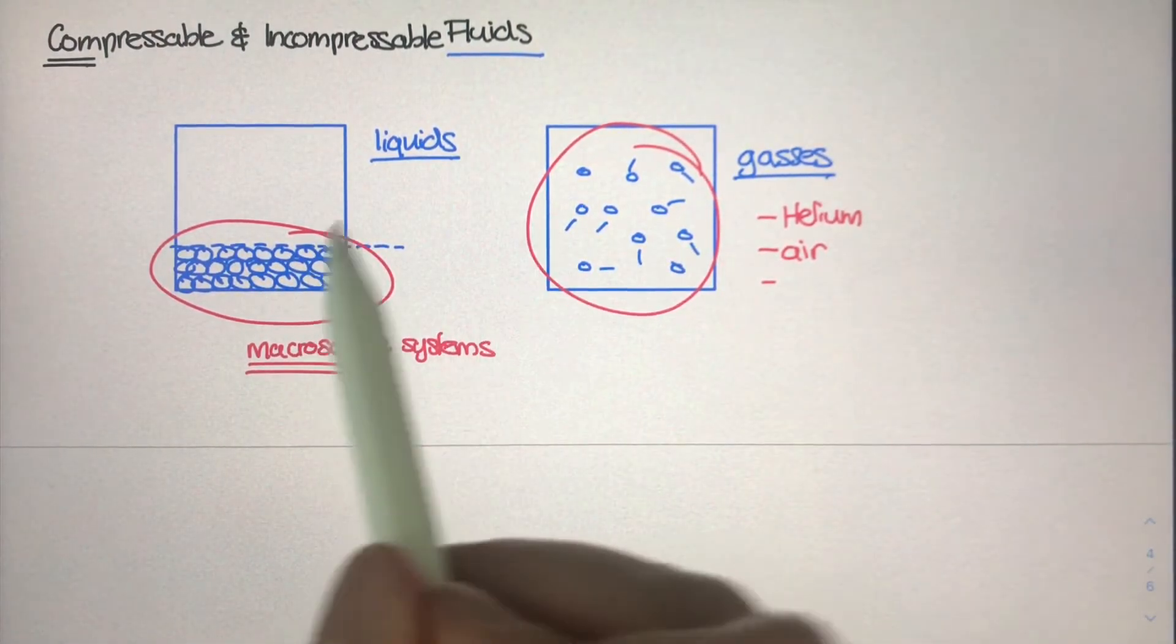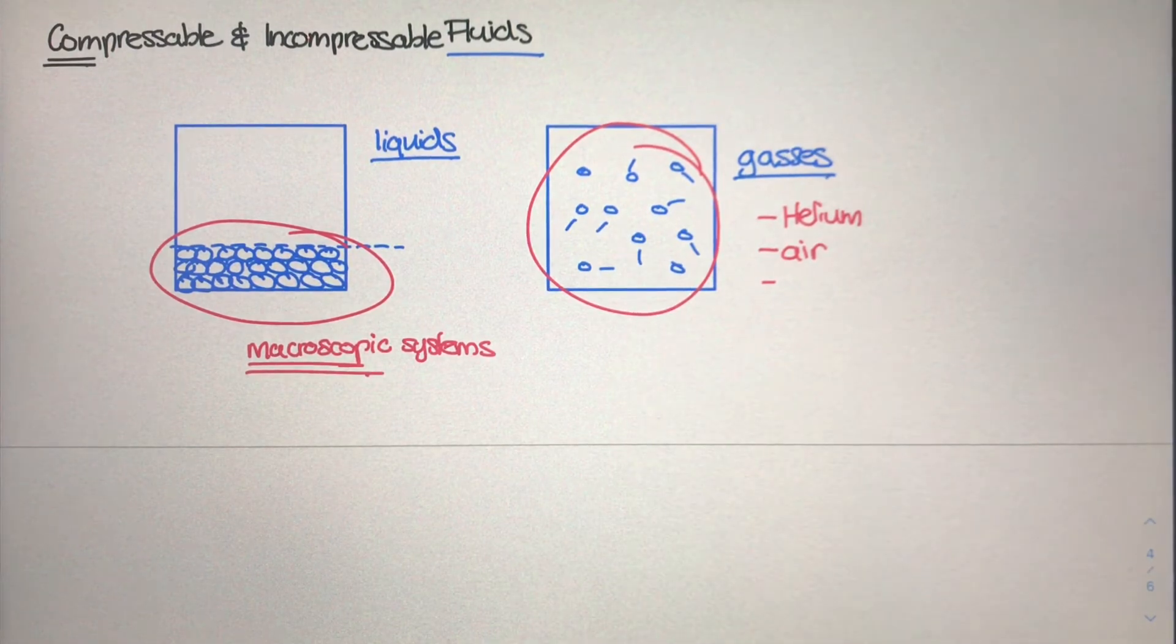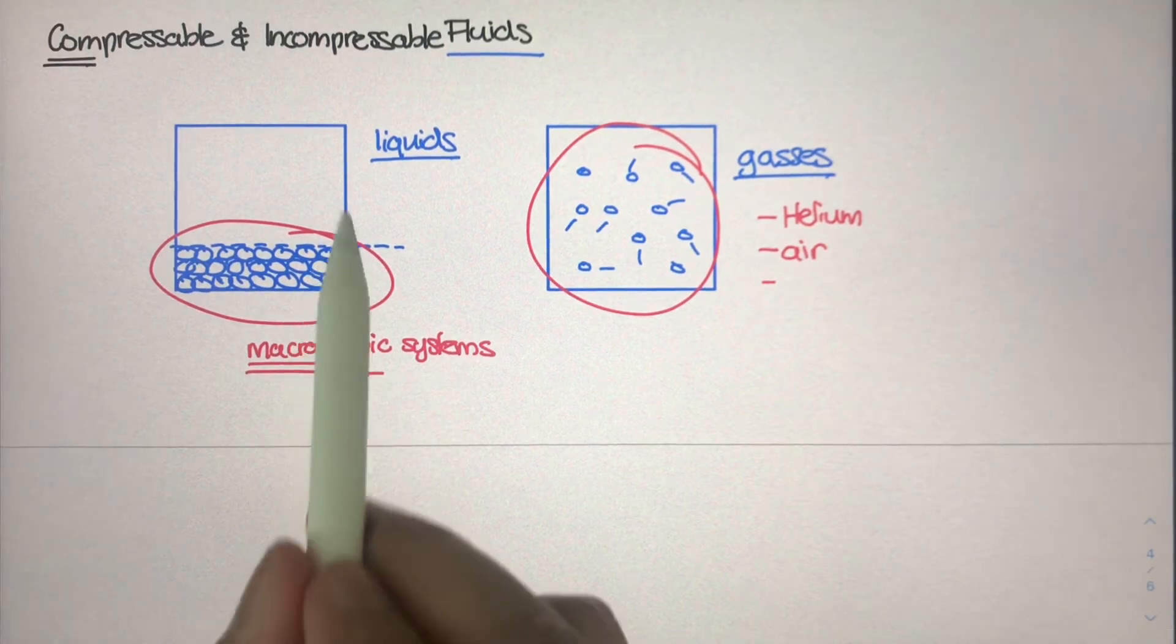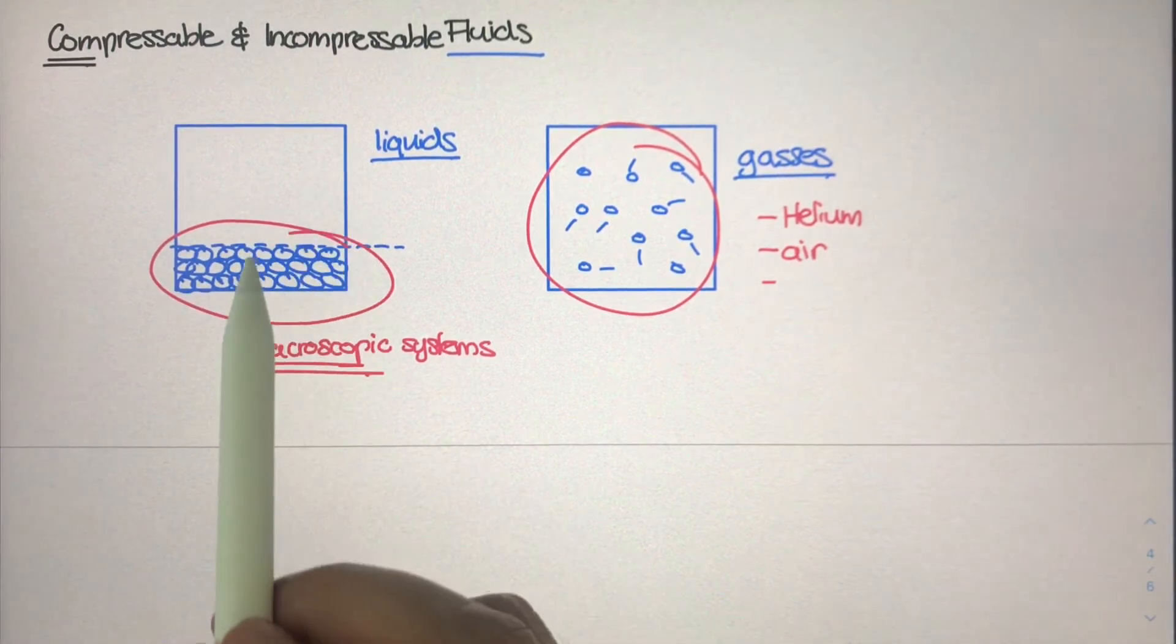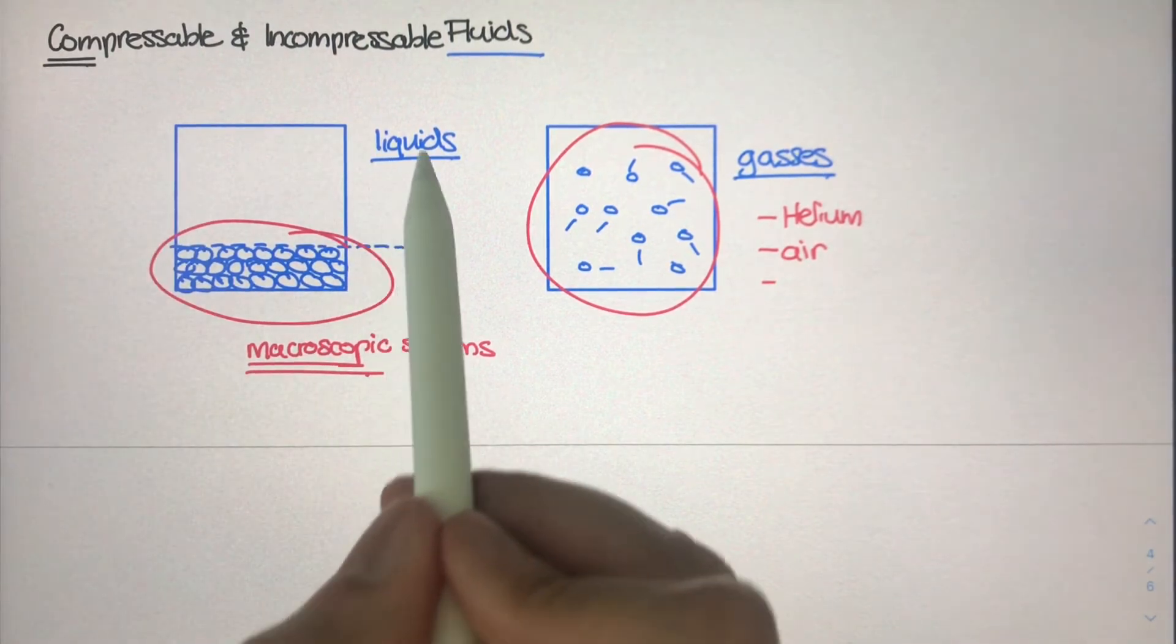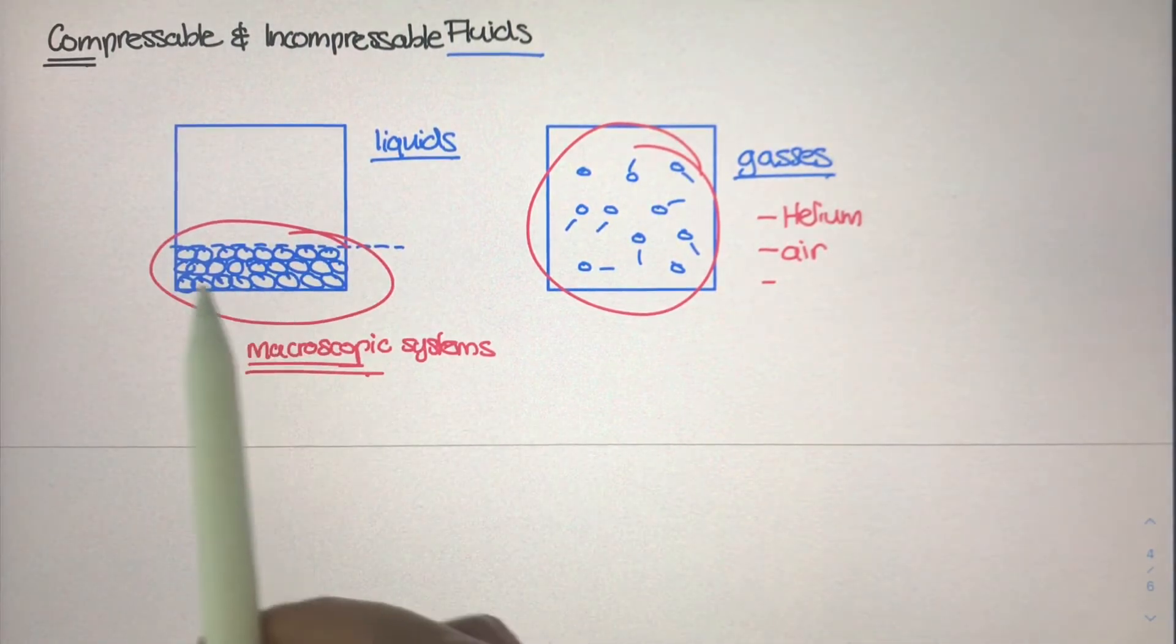So how do we actually define these macroscopic systems? Well we already kind of have been, right? We've been looking at spaces and containers. We've been pouring liquids into a container and seeing how they would act.